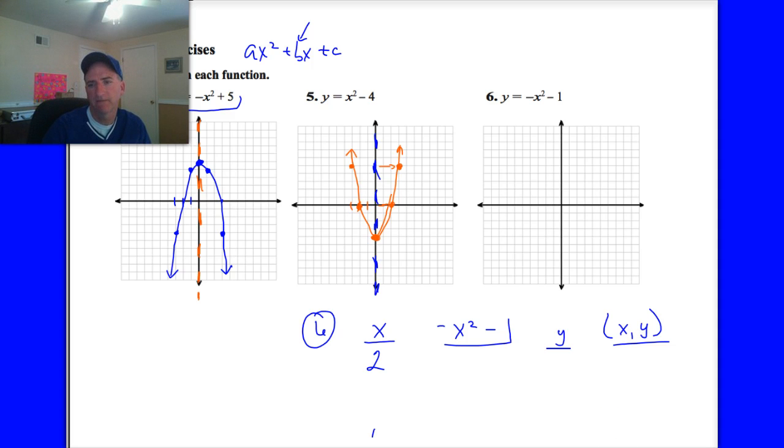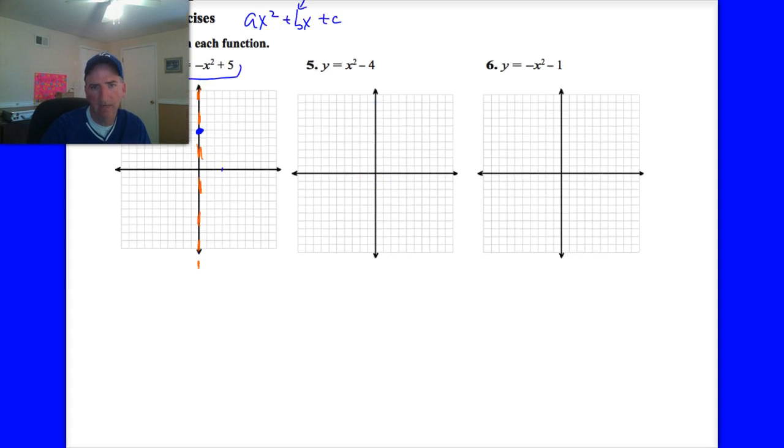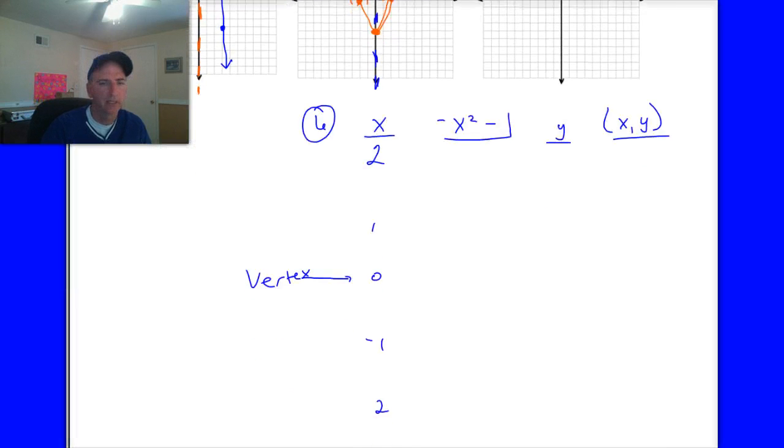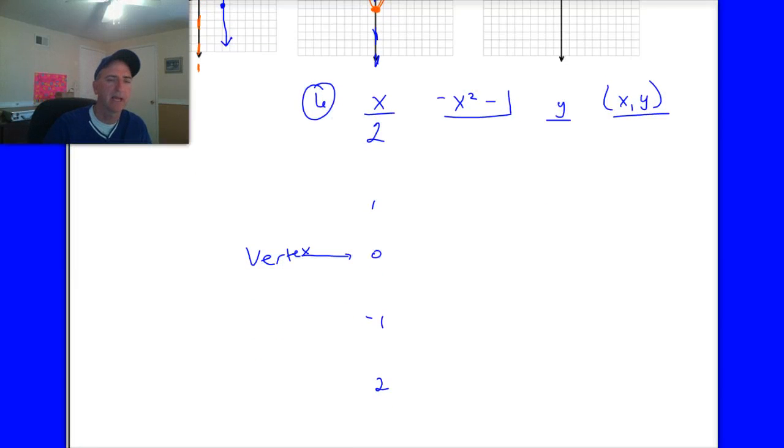But I went ahead and selected the five points for you. And I have them here. So you need to write down this chart. You might need to do it on another piece of paper on the back. Maybe you've got room on the bottom half. But I went ahead and selected the five x values for you.